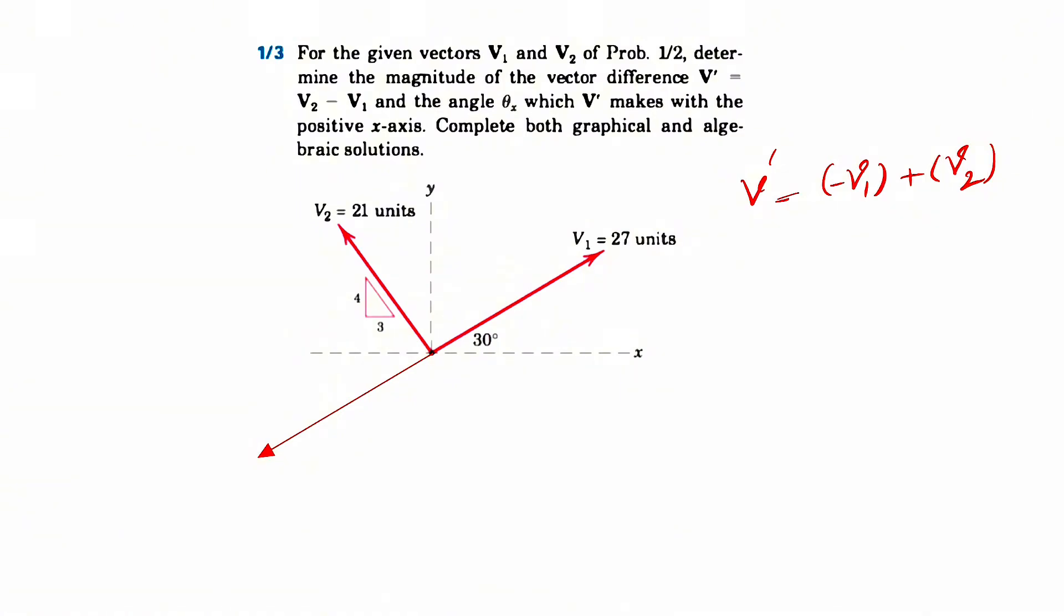So what we're going to do is that we're going to draw the same vector as our minus V1 parallel to that one. And we're going to do the same thing for V2, same vector.